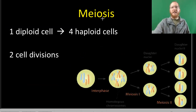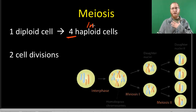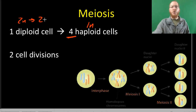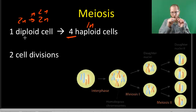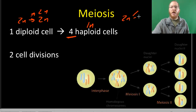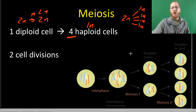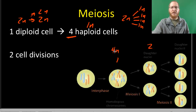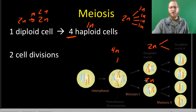Meiosis differs from mitosis in a couple of key ways. First, it produces four cells that are 1N, instead of mitosis where we go from a 2N cell to two 2N copies. In meiosis we start with a 2N cell and produce four 1N gametes. It does this through two cell divisions: the first takes us from one cell to two, going from 4N chromatids to 2N chromatids. Then without copying DNA, each of those two 2N cells divides again into two 1N cells, giving us a total of four cells.